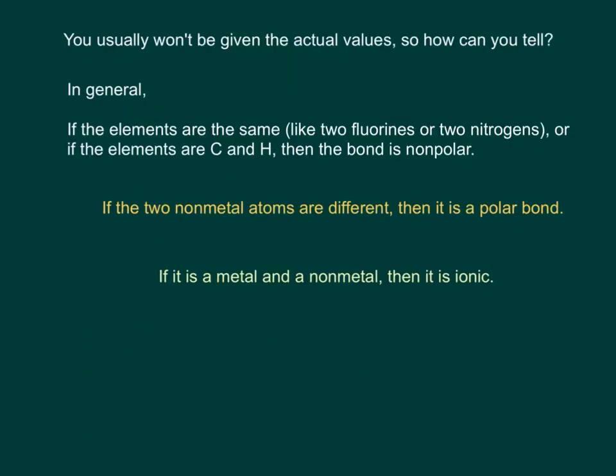Now in reality, you're usually not going to be given the actual values because that's just a question of subtracting. So how can you tell if something's going to be polar or not? In general, if the elements are the same, like two fluorines or two nitrogens, or they're carbon and hydrogen, then the bond is nonpolar. Anything with just carbons and hydrogens is also nonpolar because they're so close.